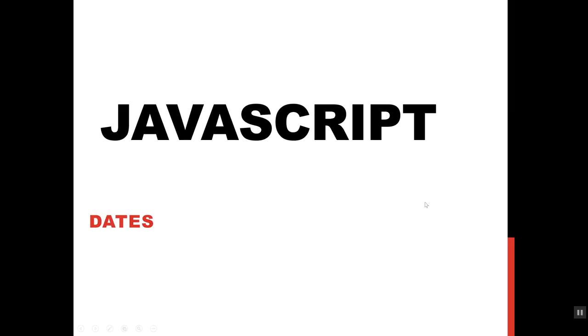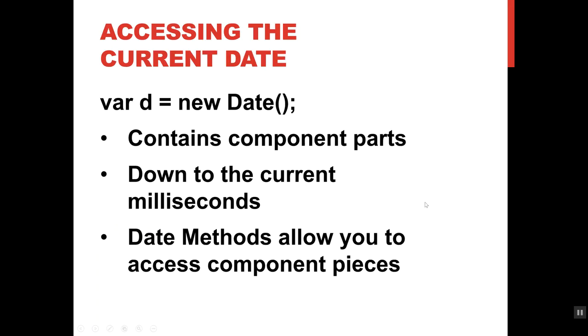To get any of these items, you first have to create a date object. You can call this variable whatever you want—I've called it 'd' for conciseness. The first step is to create a date with var d = new Date(), which is an existing method in JavaScript.